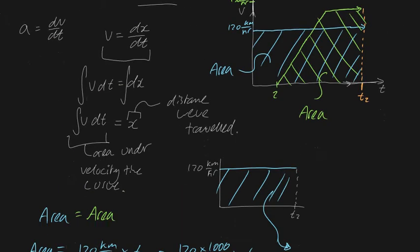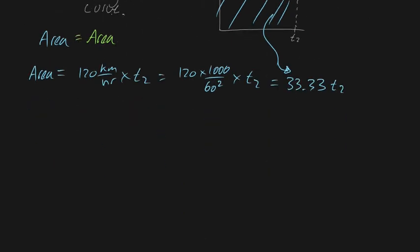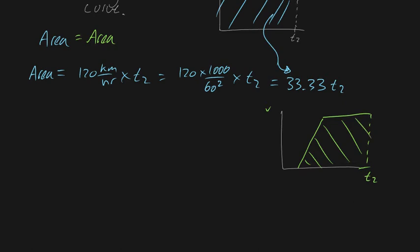Now comes the hard part — calculating the area under the green curve in time t2. To do this, we need to split it into both a triangle and a rectangle. We know the first value is two seconds, but we don't know the time at which the biker reaches max speed. We need to find that in order to solve for the area under the triangle.